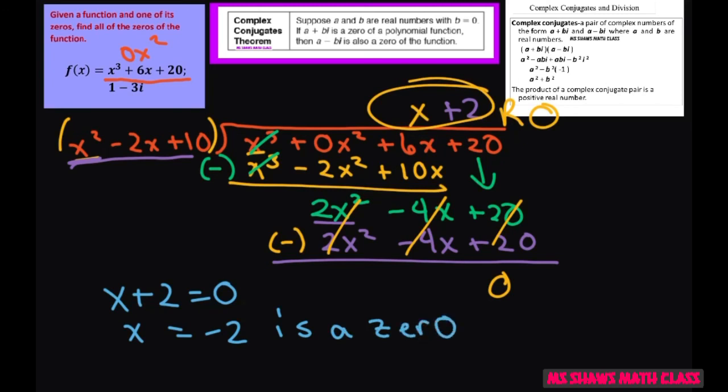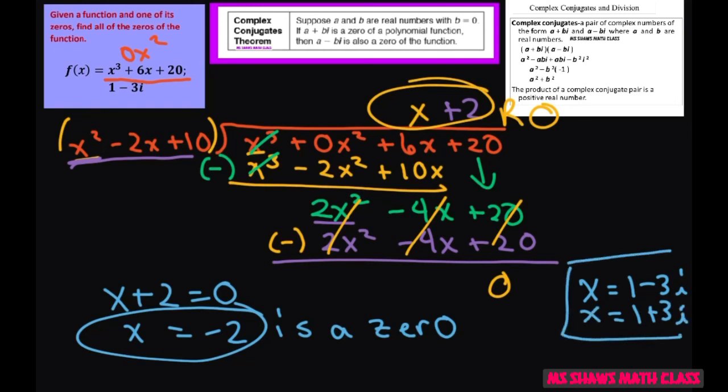So that's the missing zero we have. Of course the other 2 zeros again were 1 minus 3i and 1 plus 3i. So that's your 3 zeros. Thank you, have a nice day.